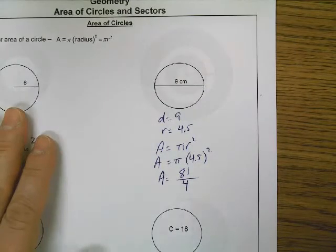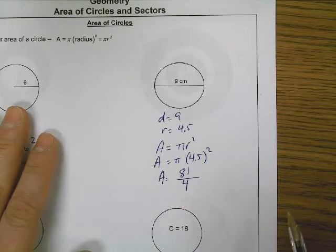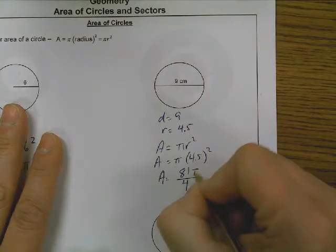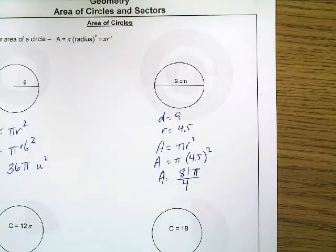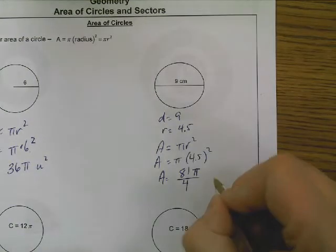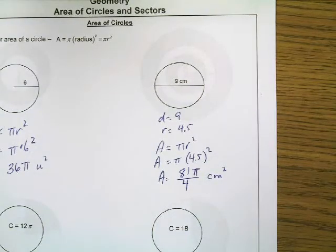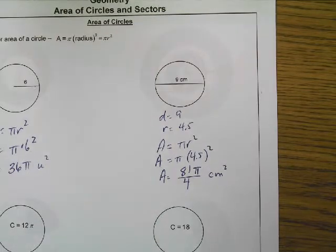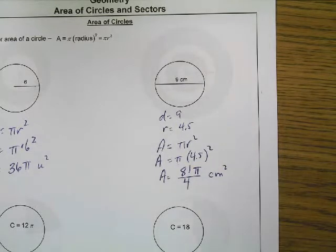Because we are multiplying by pi, and pi is on the top of a fraction — any number not on the bottom of a fraction is on the top — we put pi right there. So we get 81 pi over 4 centimeters squared. There will be times when I will let you put that into decimal form, and if so, you just type in pi times 4.5 squared and the calculator will do that for you.